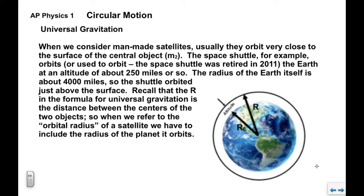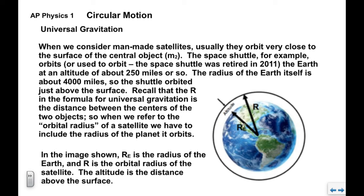The space shuttle used to orbit the Earth at an altitude of about 250 miles. It actually varied from maybe 200 up to about 600 miles. But the radius of the Earth itself is 4,000 miles, so the space shuttle was pretty much right above the surface. Now R, when we look at the R in the universal gravitational formula, the R is the distance between the centers of the two objects. When we're talking about the orbital radius of this satellite, we need to include the radius of the planet that it orbits. In other words, R sub e is the radius of the Earth. We have the altitude as the distance above the surface here. In order to calculate the orbital radius of the satellite, we would need to add these two: the radius of the planet plus the altitude.